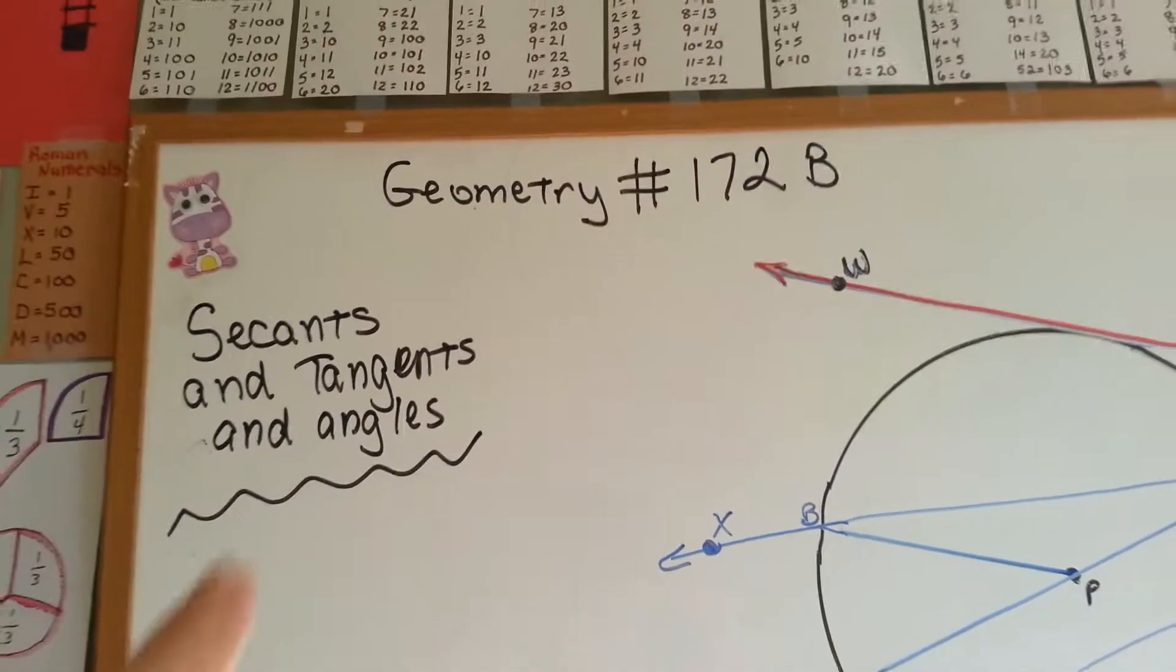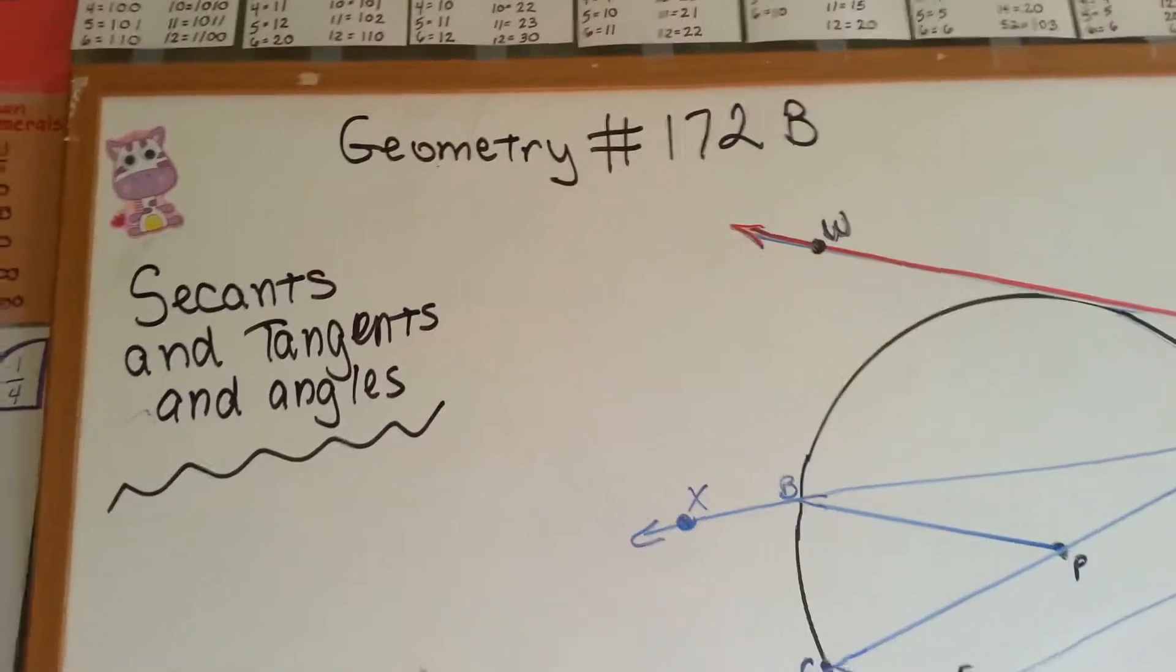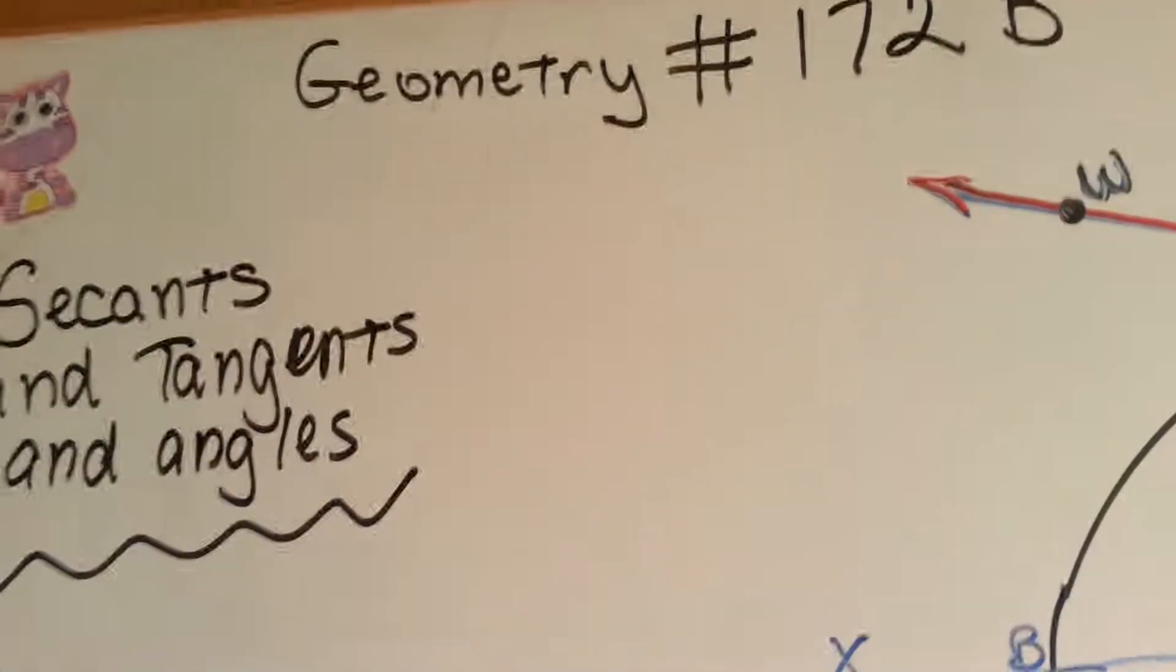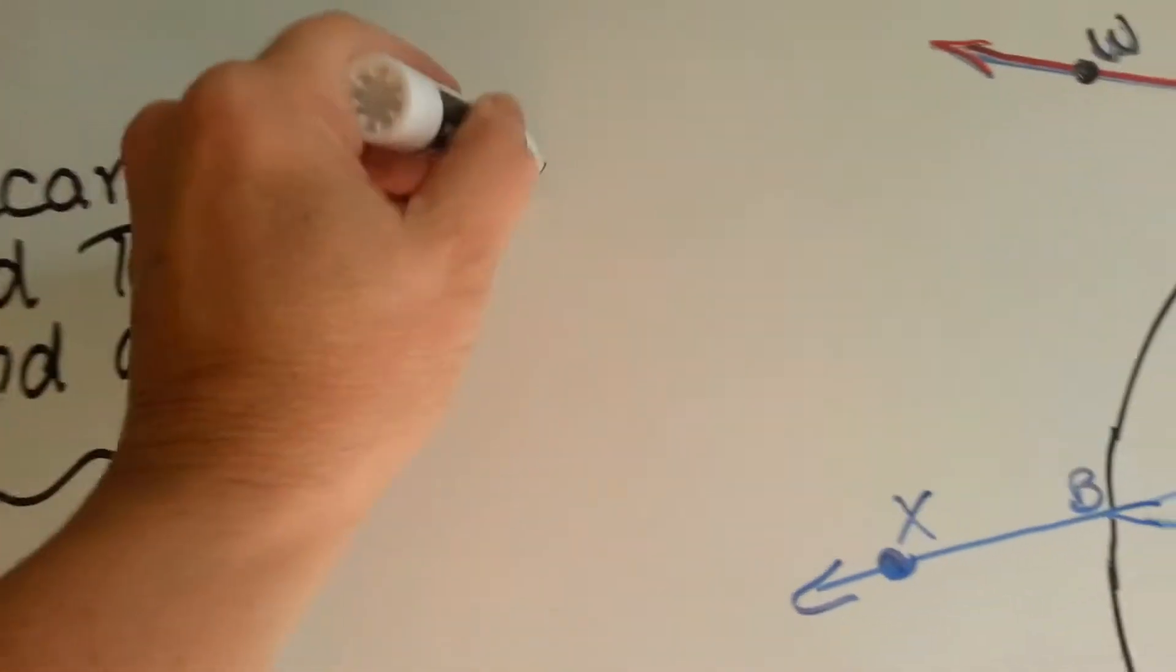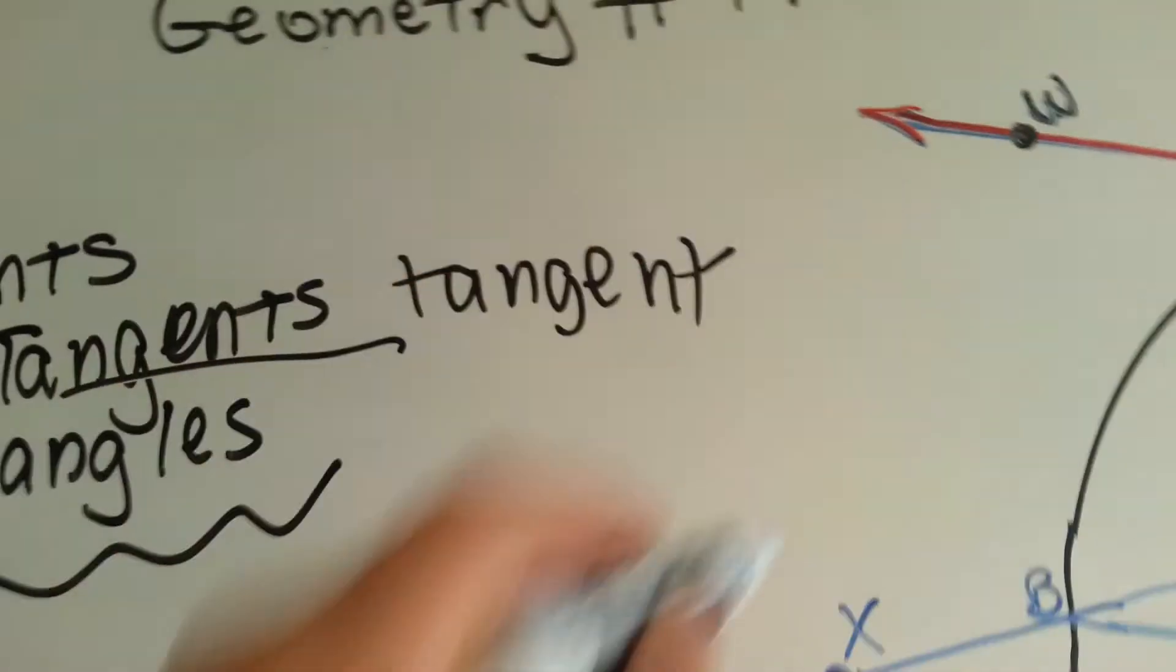So what we were discussing was secants and tangents and angles and now what we're going to be talking about in this one is going to be tangent-tangent.